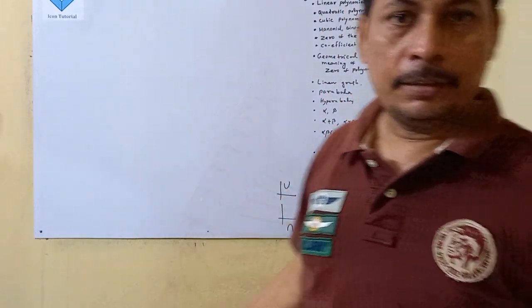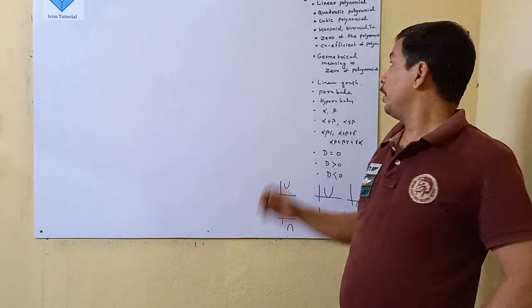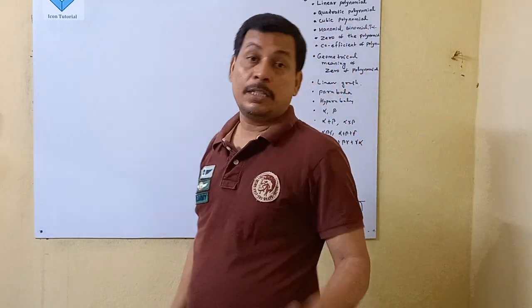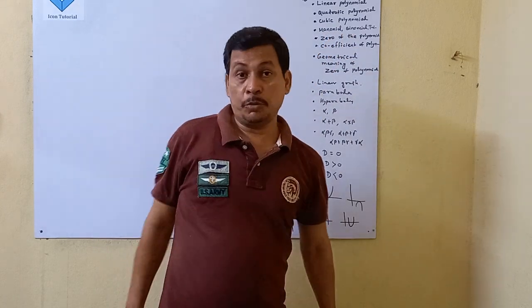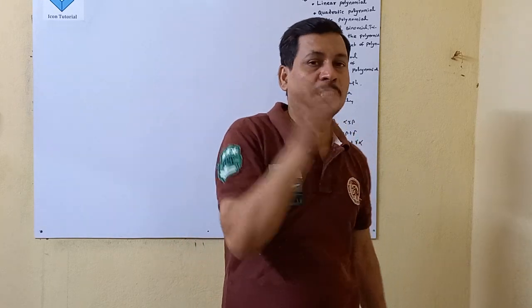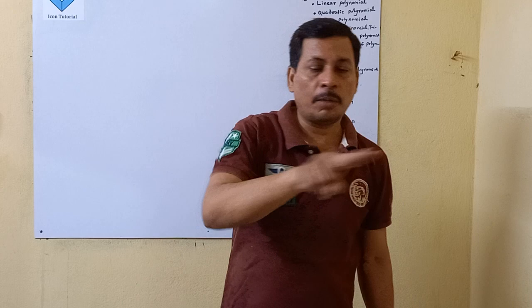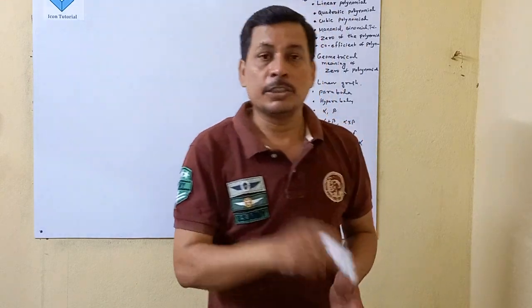Last class we discussed the degree of polynomial, linear polynomial, cubic polynomial. Then monomial, binomial — 1 term is monomial, 2 terms is binomial, 3 terms is trinomial. More than that is also called polynomial. Special names are given: 1 term is monomial, 2 terms is binomial, and so on. All are considered as polynomial.